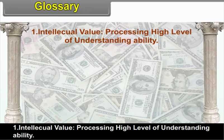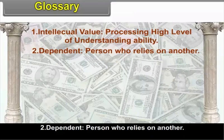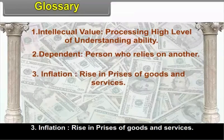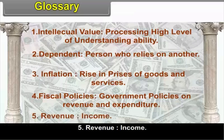Glossary: Intellectual value — processing a high level of understanding and ability. Dependent — a person who relies on another. Inflation — rise in prices of goods and services. Fiscal policies — government policies on revenue and expenditure. Revenue — income.